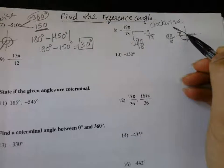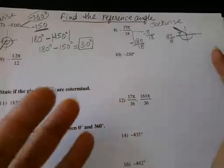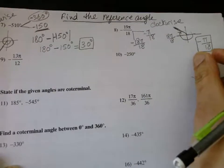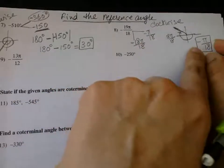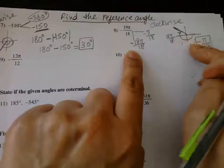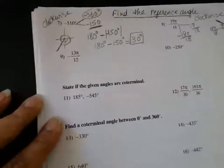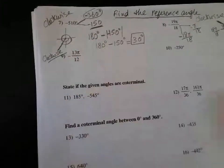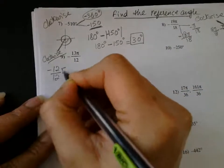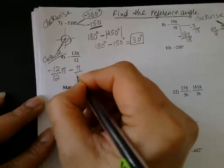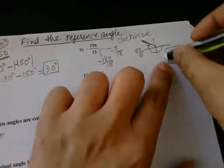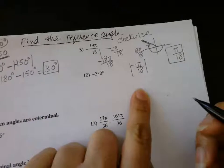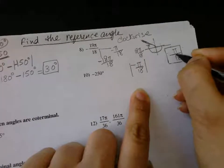The reference angle is formed between the terminal side and the x-axis. So the reference angle is π/18 — that is the portion above 18π/18, which is nothing but 180° or π. But we cannot have the reference angle as negative, so we take the absolute value of negative π/18, and we end up with our reference angle as π/18.